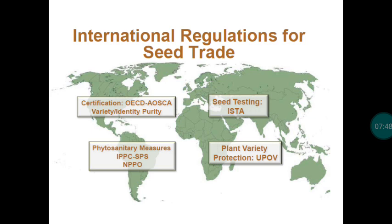Once you decide to export material to another country, your material should be protected. Protection is very important — otherwise, the receiving country could multiply and distribute it without further payment. If the material is protected, production and distribution rights remain with you, and whoever wants to produce and distribute must pay a royalty. The agency related to this is UPOV, and India has an equivalent authority, PPVFRA.